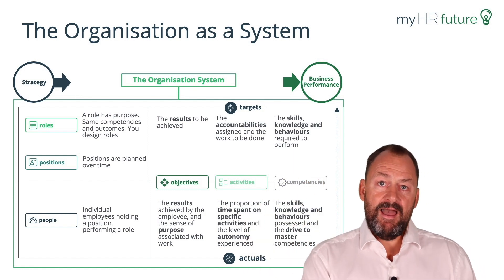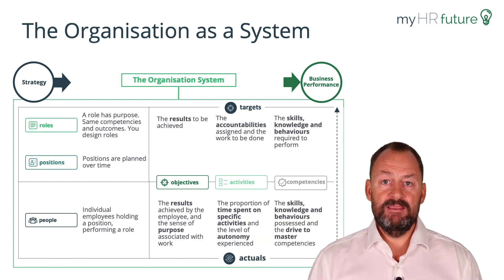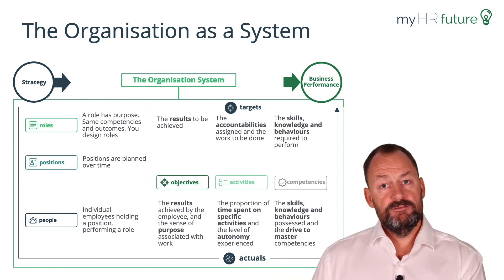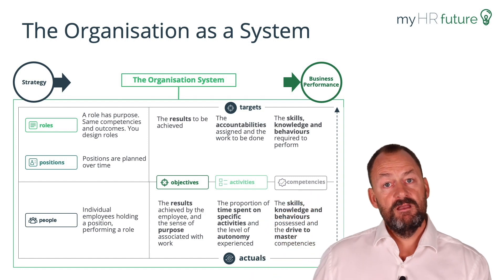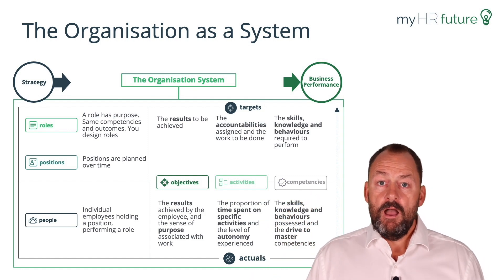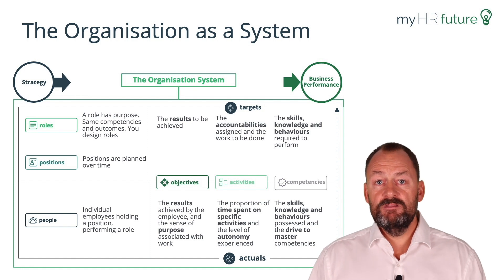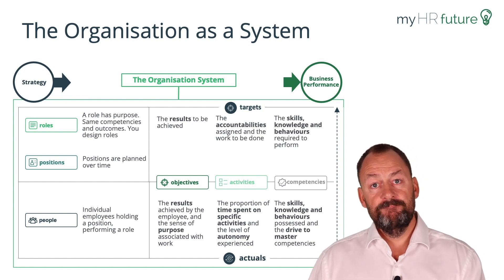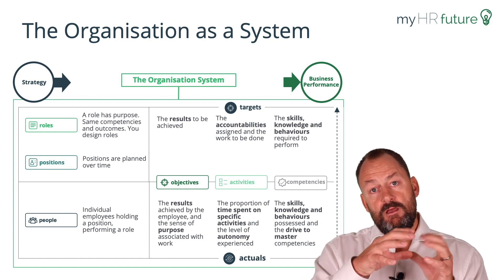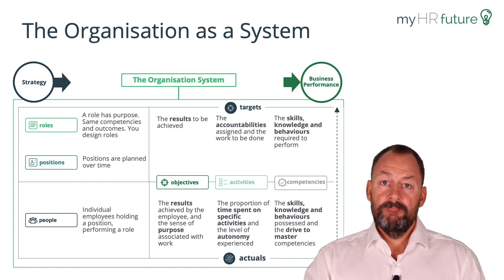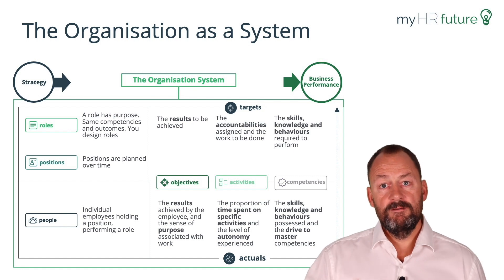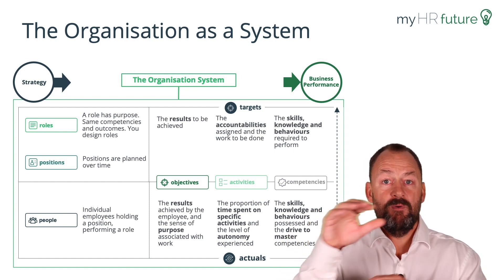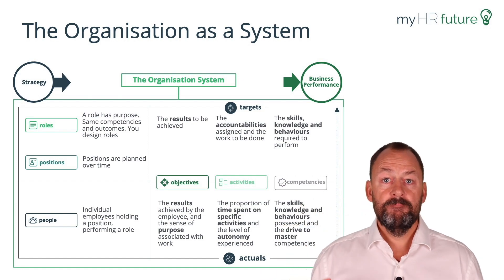People have actuals — people supply competencies, they have skills, which don't always match those targets, and therefore there are gaps. People do work: how much time do people spend doing what, and are they doing the right work? And what are you actually achieving? So this is the org as a system — these six components of people, positions, roles, objectives, activities, and competencies — and we link all of this together through data.